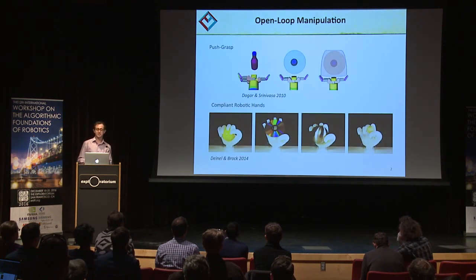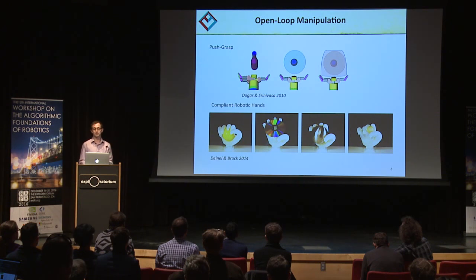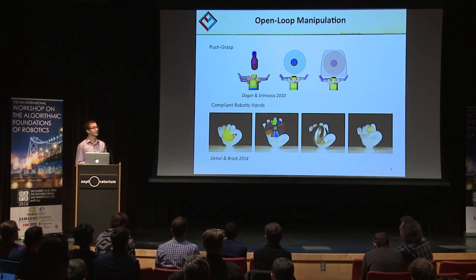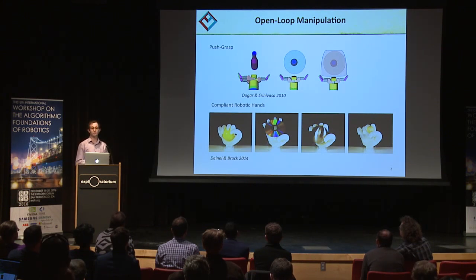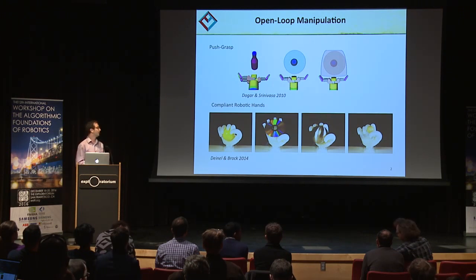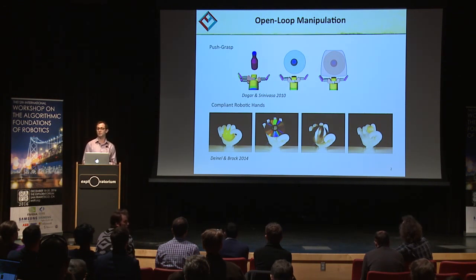Traditionally, the manipulation community has focused on open-loop, stable solutions and the planning problem. For example, you've just seen Michael present a great work on push-grasp actions, where you can push an object using a funnel-shaped gripper until it falls in the palm, and then you can stably grasp it. Other approaches involve the use of compliant hands that are naturally robust to a wide variety of object poses.